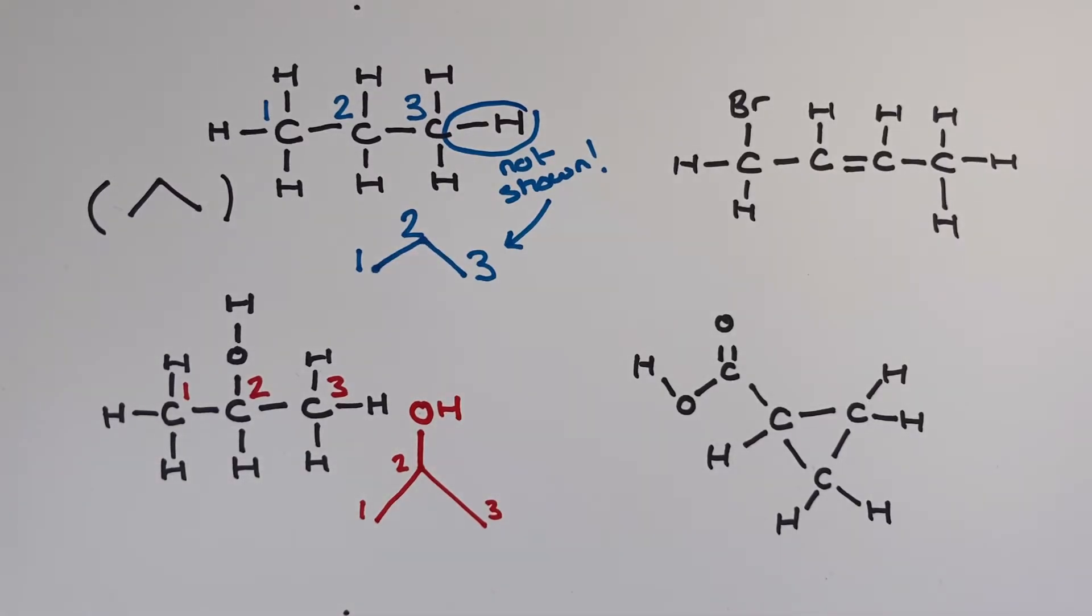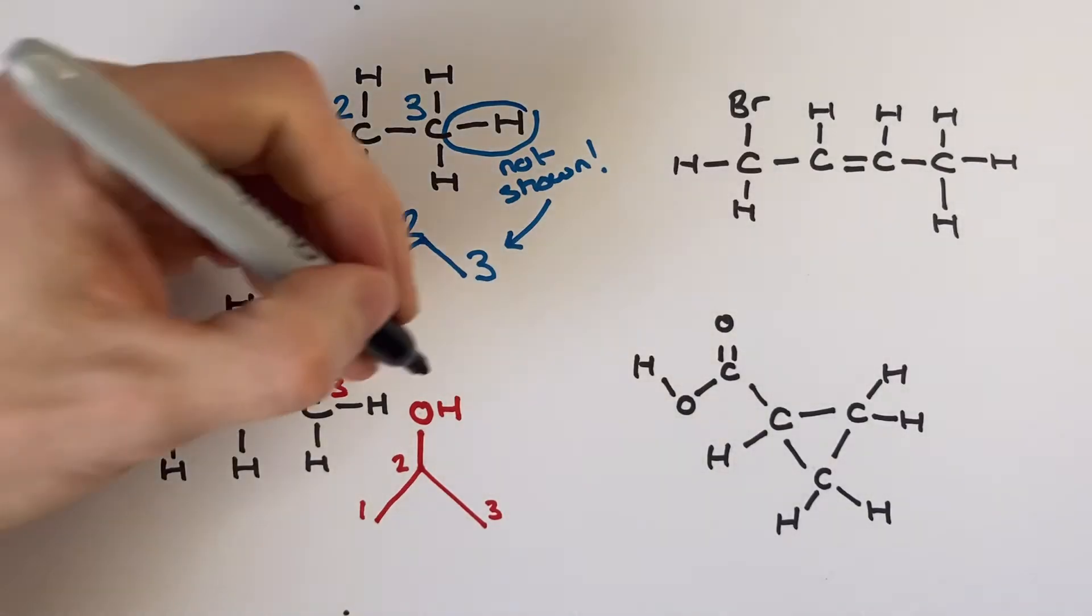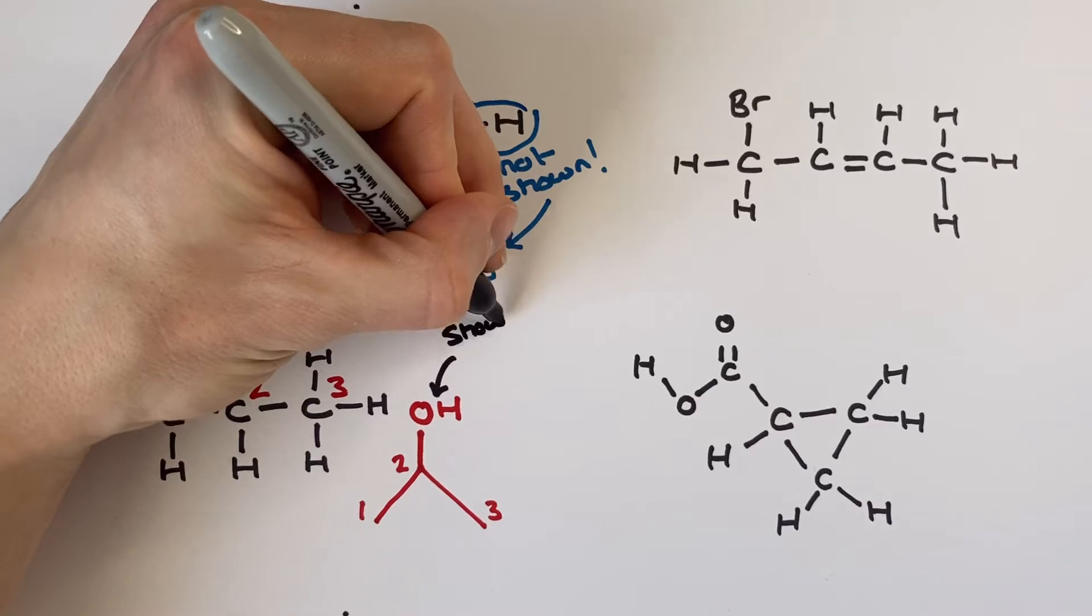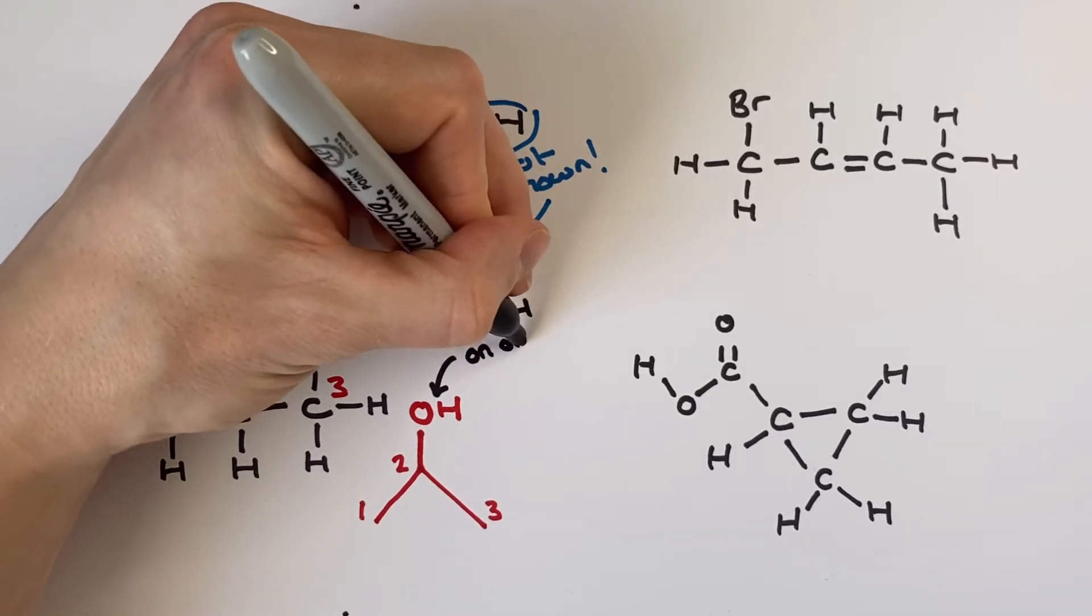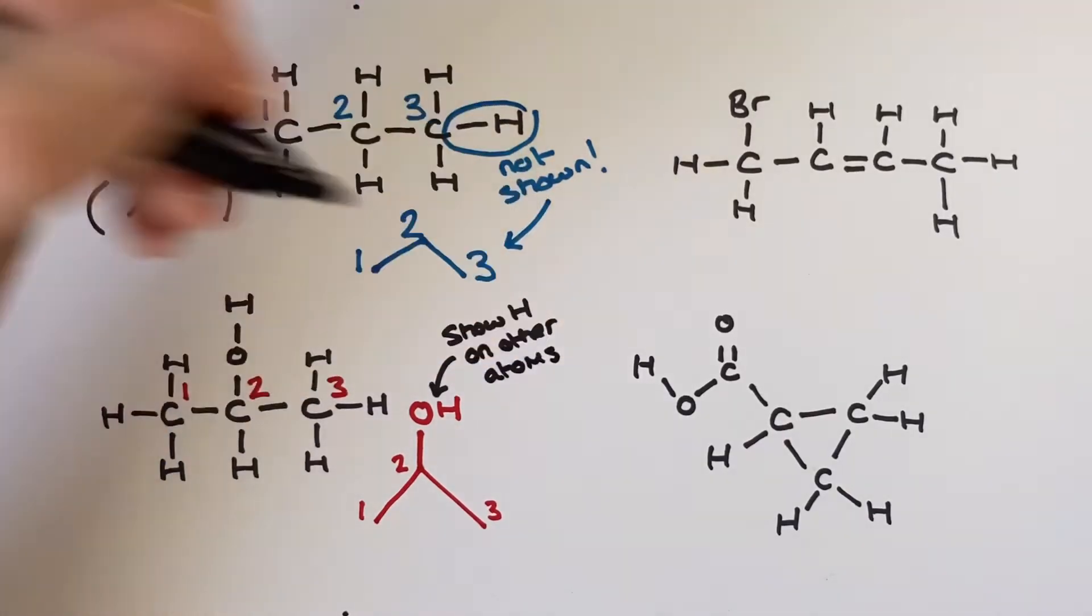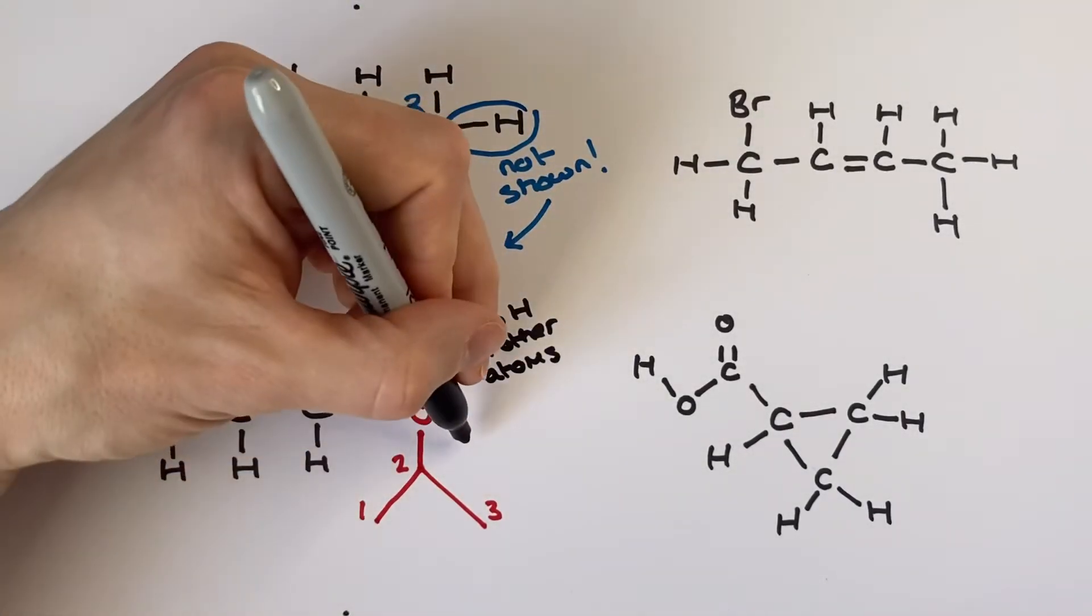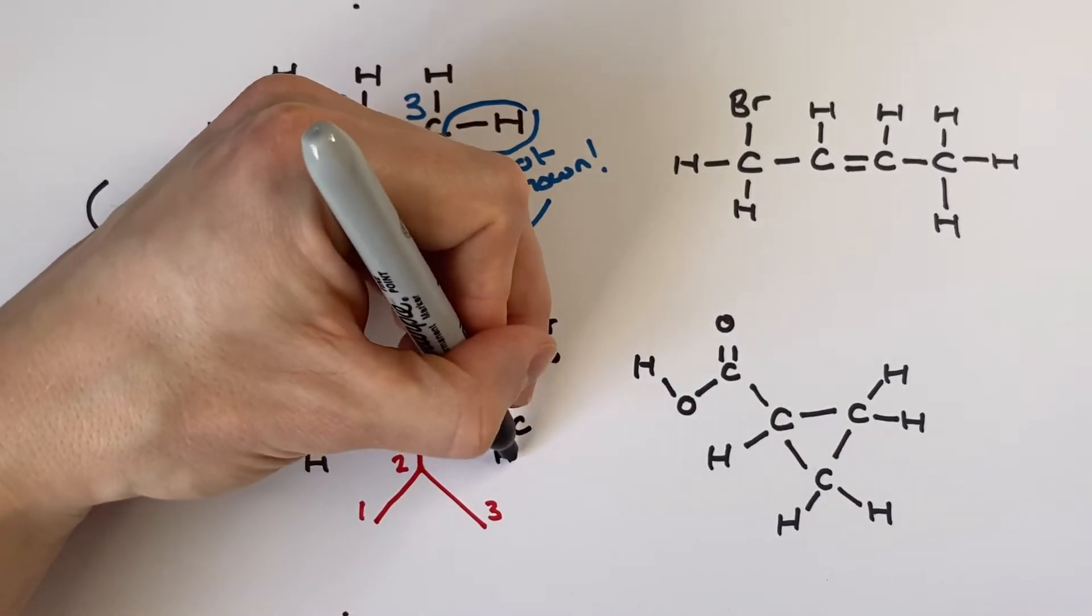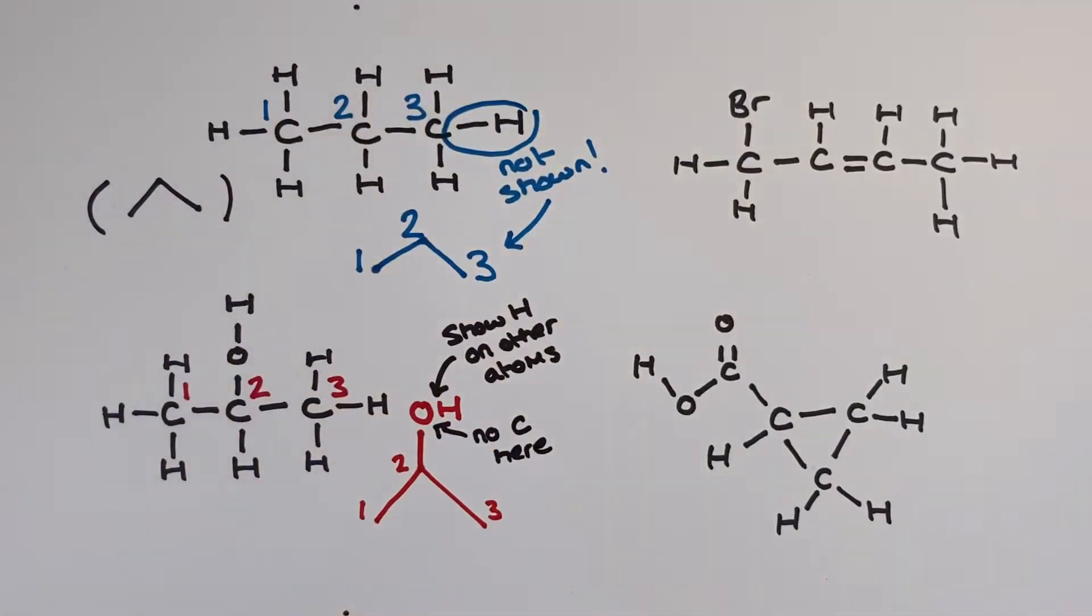A couple of finer points about this one. Your bond connectivity has got to be clear. Make sure the carbon labeled number two is clearly bonded to the oxygen of the OH group. It's very important to keep an eye on what we call bond connectivity and I often get asked is there a carbon atom at the end of that line before the oxygen? No. I've shown an oxygen there at the end of the line so you can be sure there's no carbon there. There's still only the three I labeled up.